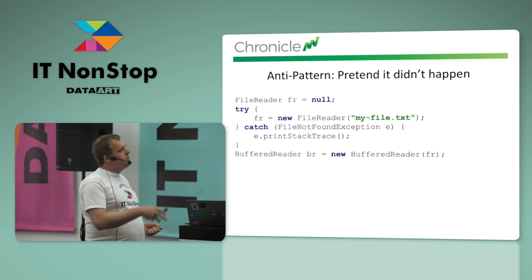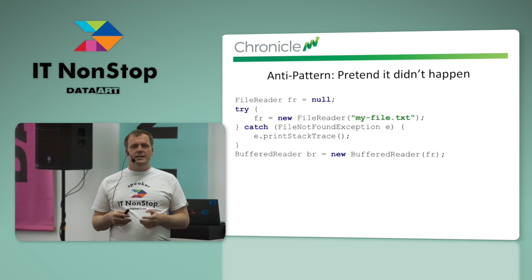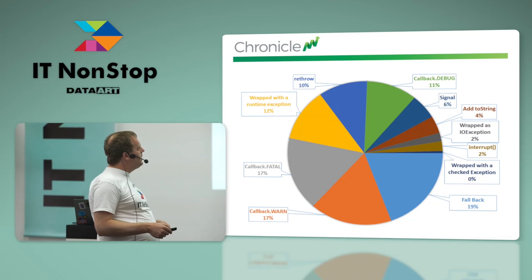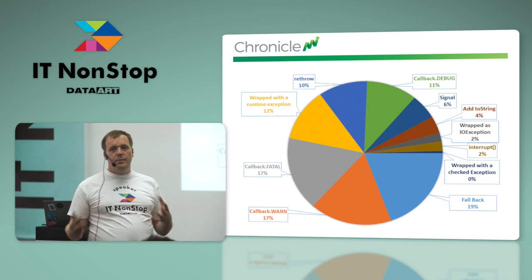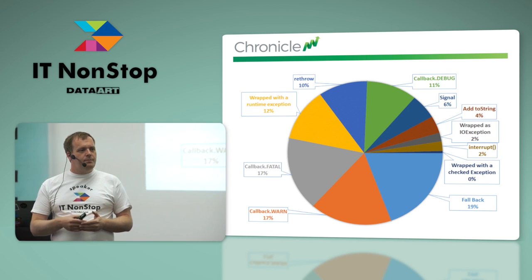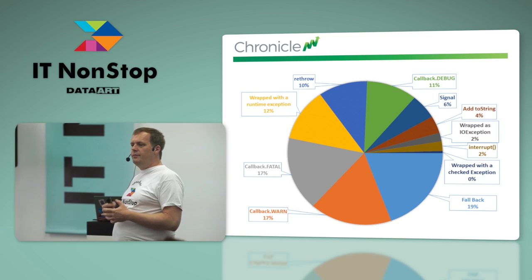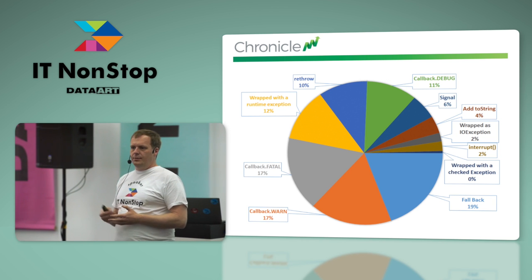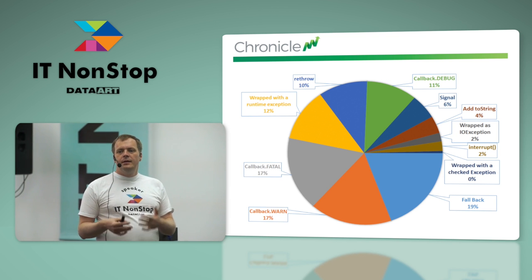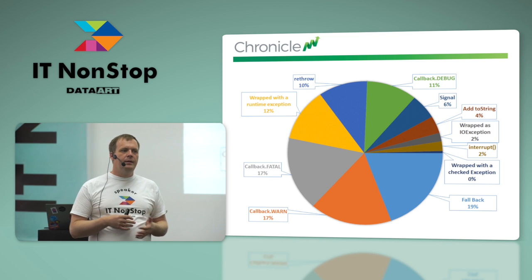I did a review of our codebase to see how we handle exceptions. When I went through it, I found it was ad hoc — written by different developers at different times with inconsistencies. After reviewing and making it consistent, this was the distribution we ended up with. The most common way of handling an exception was to fall back gracefully — having some workaround, some other means of attempting to continue or recover. That's easier in infrastructure code where there's often another way of dealing with it, but that is what I consider to be the ideal.